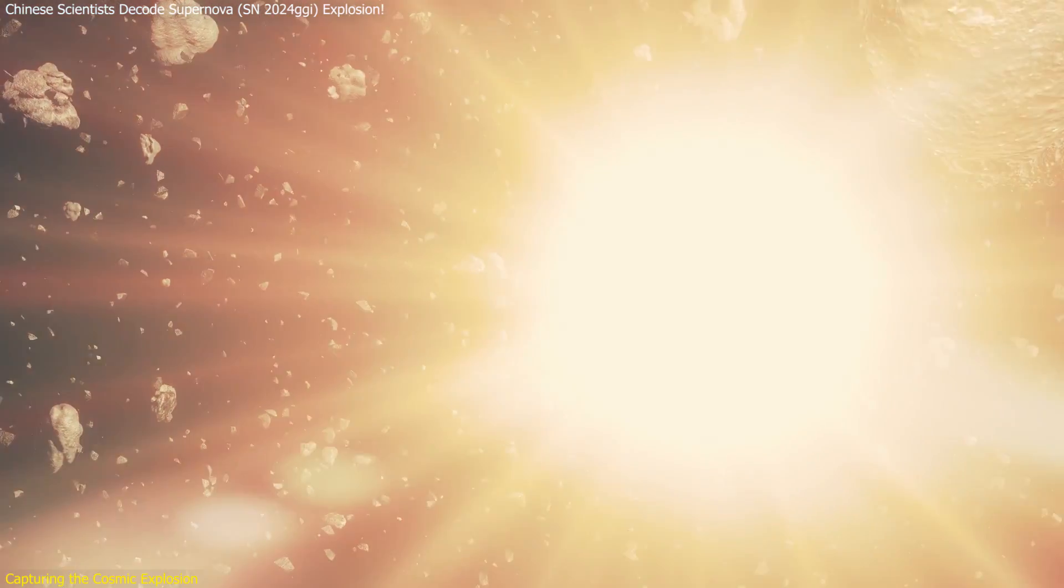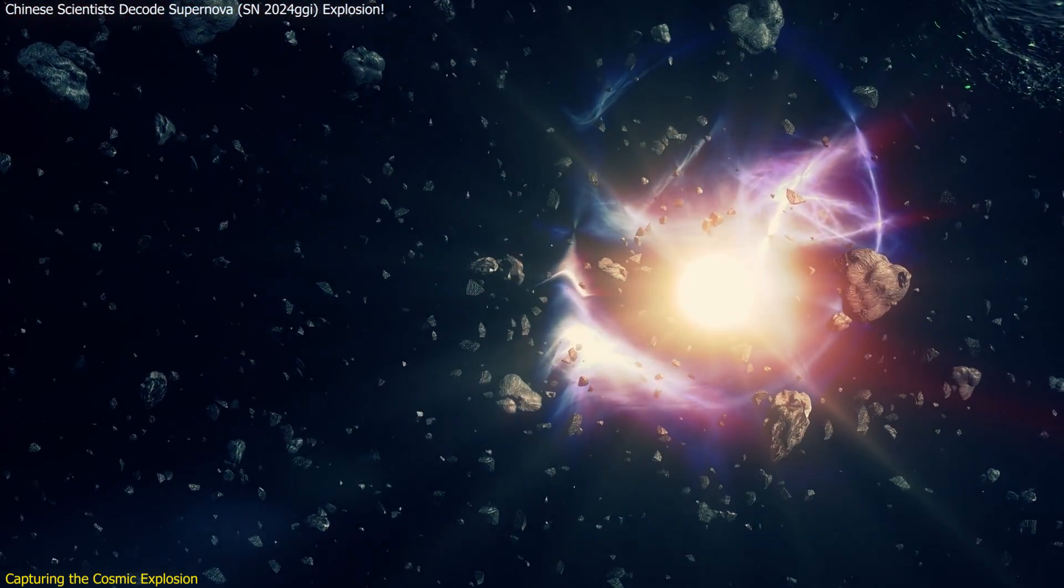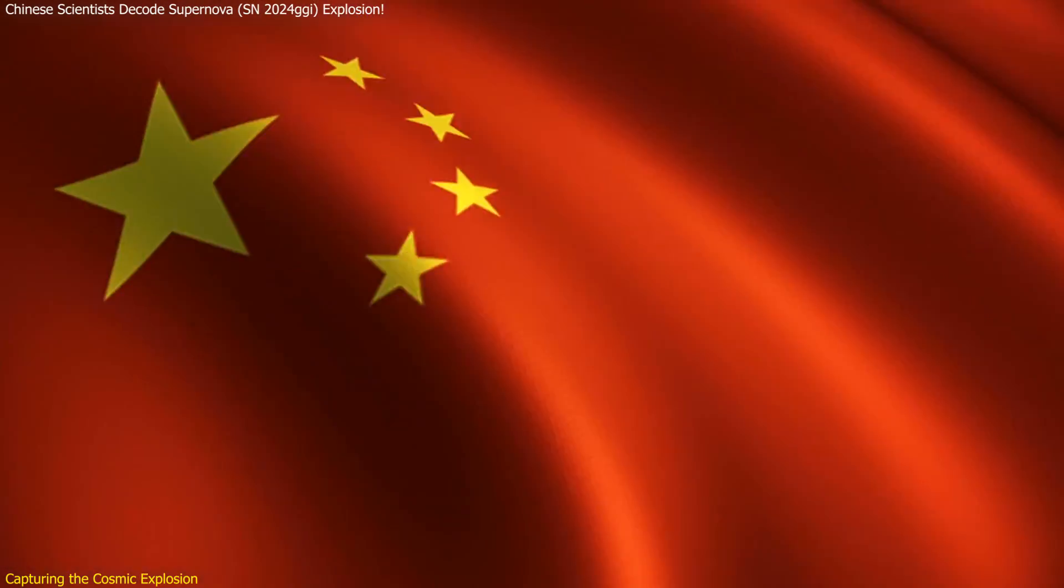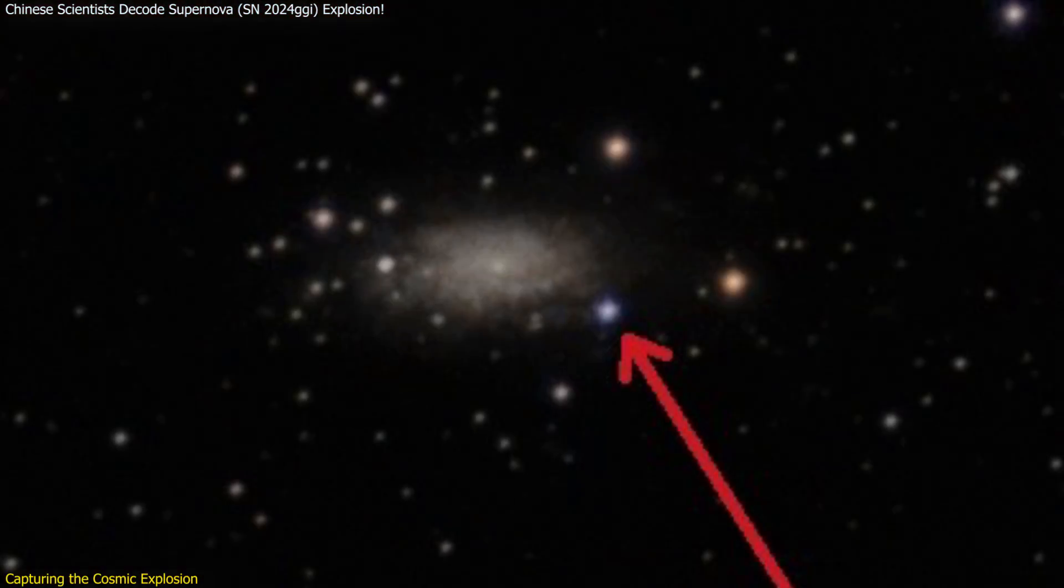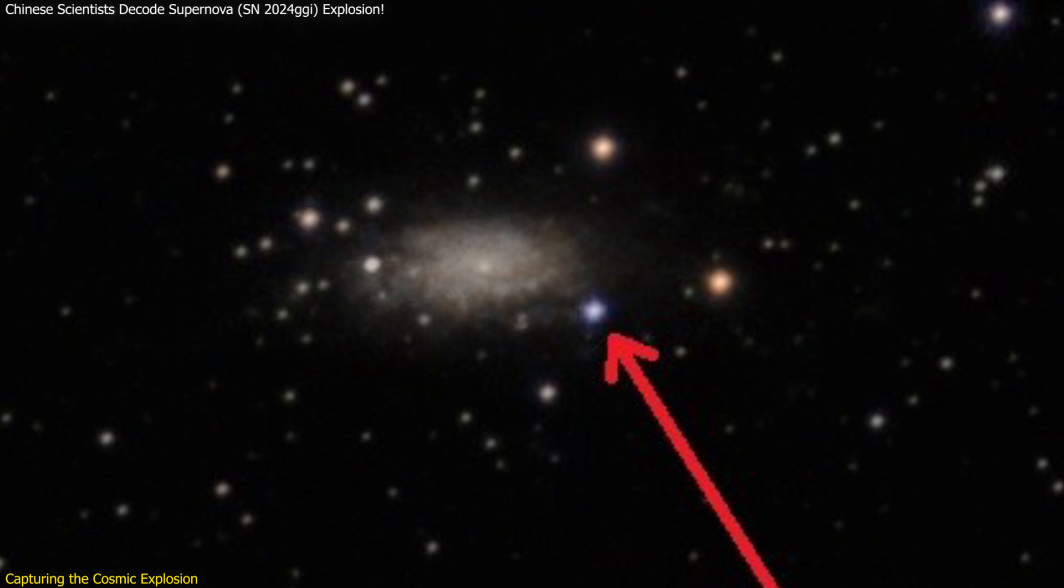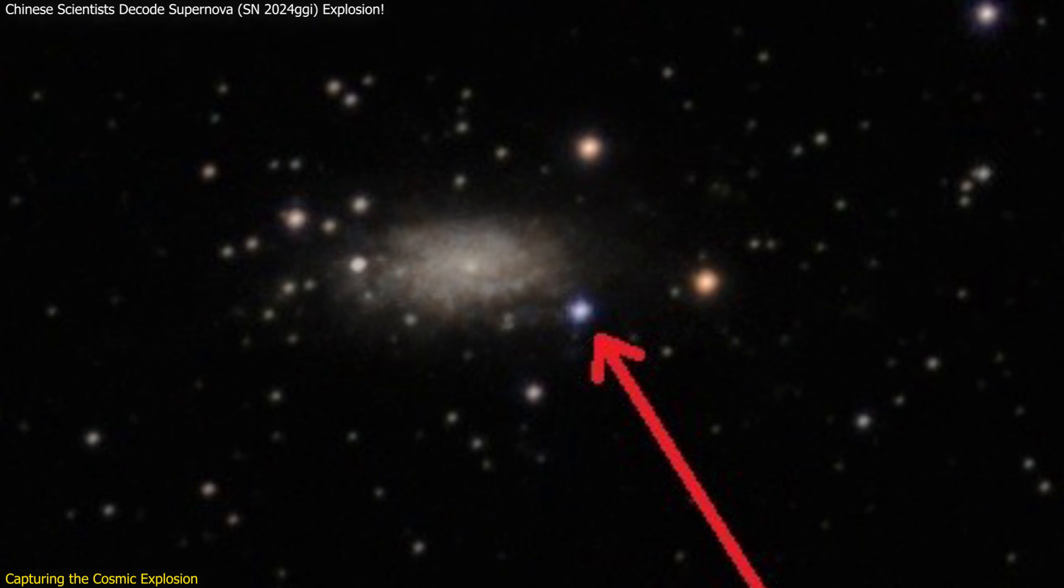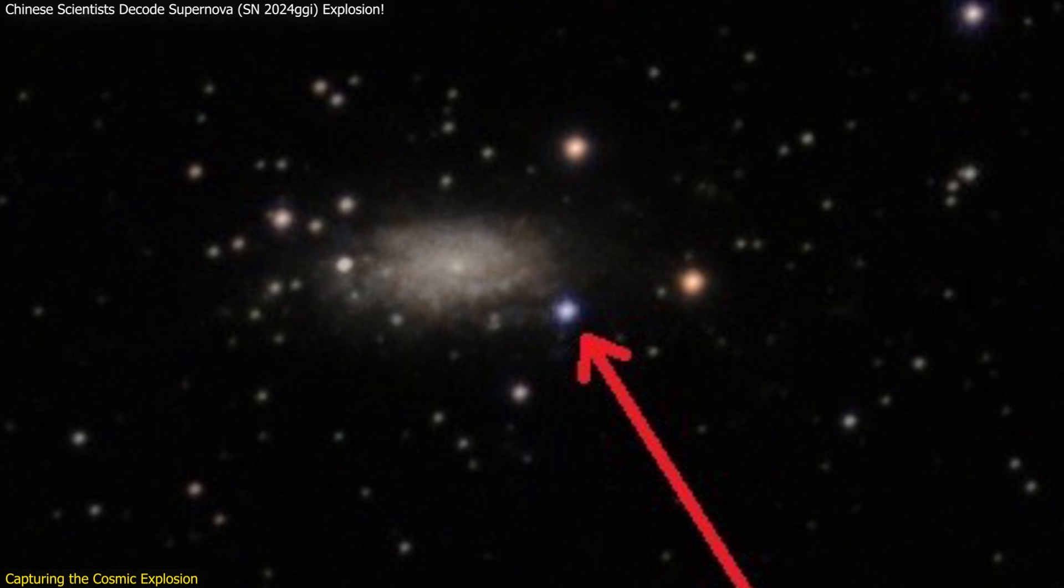Supernovae are among the most powerful and spectacular events in the universe. Recently, Chinese scientists captured a groundbreaking moment in cosmic history: the exact instance when a supernova's shock wave, SN 2024 GGI, broke through its surrounding dense material.